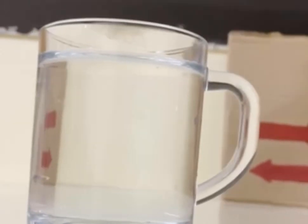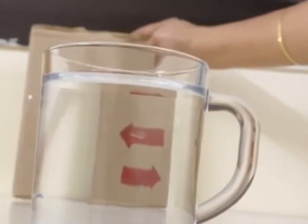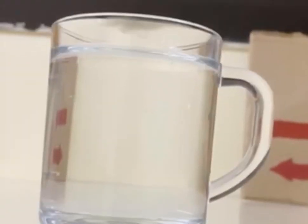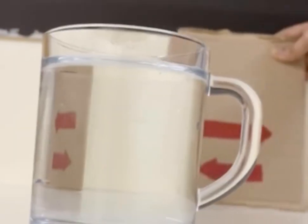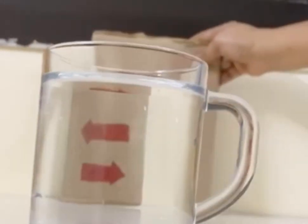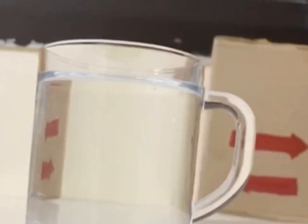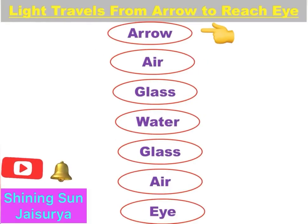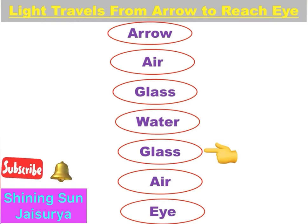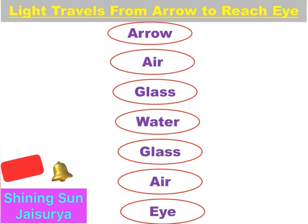You can see the arrow's direction gets changed while we see it through the glass of water. The light reflects from the arrows, passes through the air, glass, water, glass and air. Finally, it reaches our eyes.